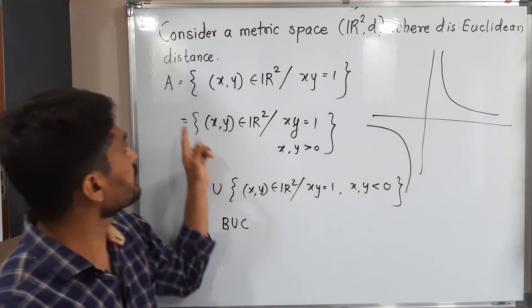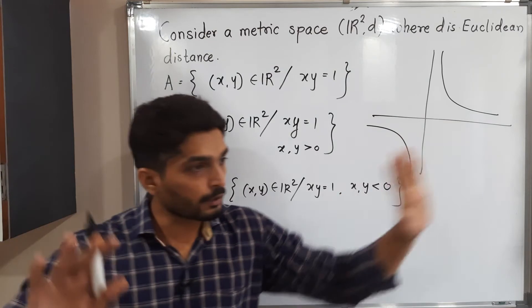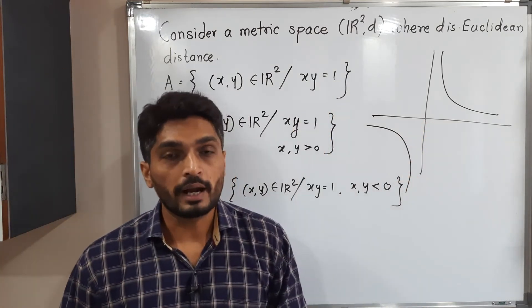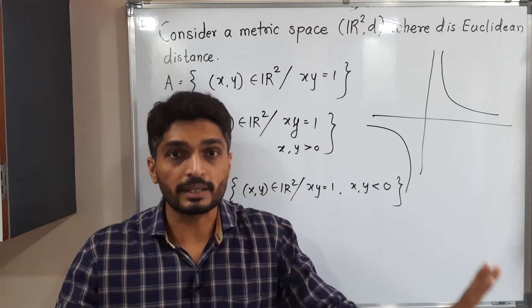Union of B and C is nothing but given set A. This part of hyperbola union that part of hyperbola gives you a complete hyperbola and these two sets are separated.